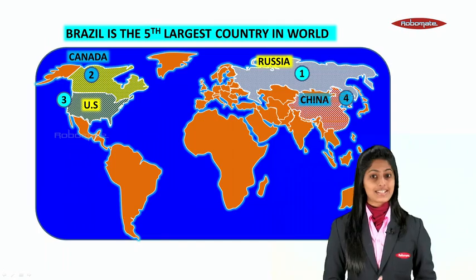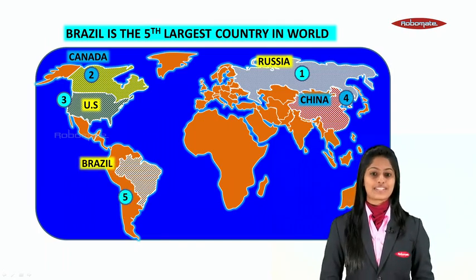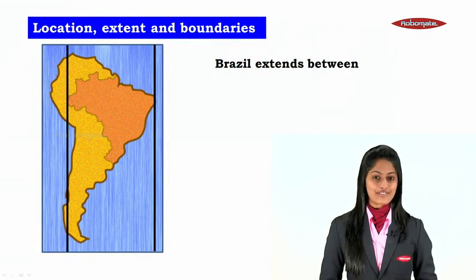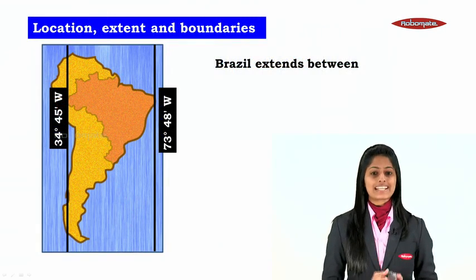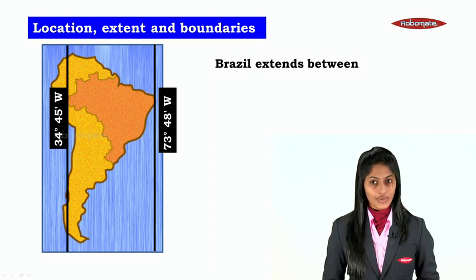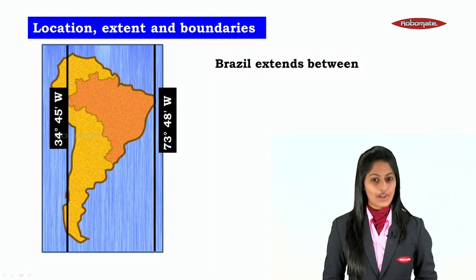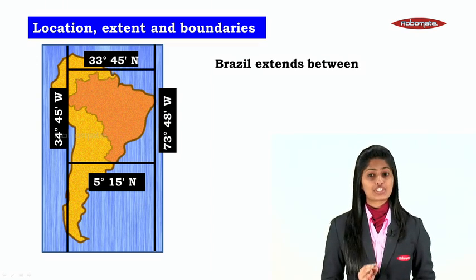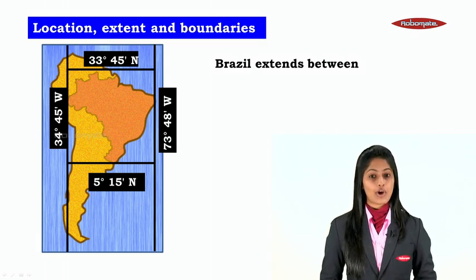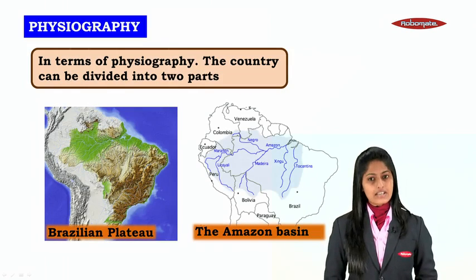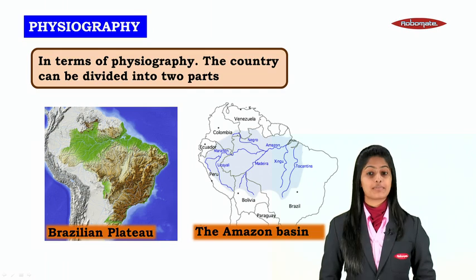Then we have the US, China, and Brazil. Now talking about the location, extent, and boundaries of Brazil: Brazil extends between 34 degrees 45 minutes west up to 73 degrees 48 minutes west longitudes, and 33 degrees 45 minutes south up to 5 degrees 15 minutes north latitudes.